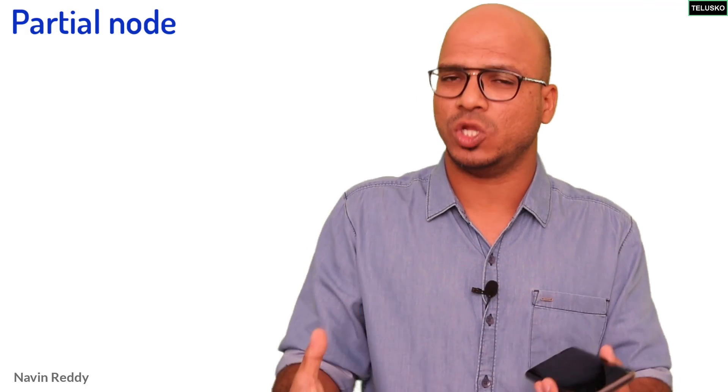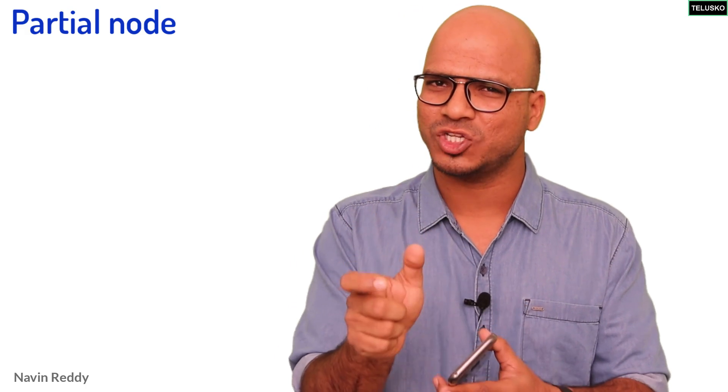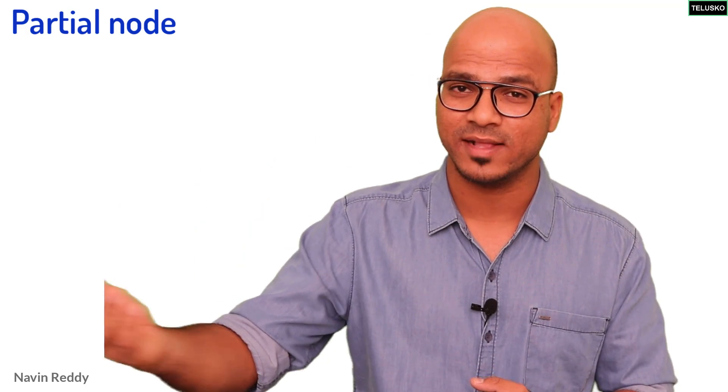This will also be a node. The moment you install software, this becomes a node, but this will be a partial node because I cannot simply download the entire blockchain on this phone. This will have some part of blockchain so that it can run, so that it can send money to someone else. That's your light node or partial node.